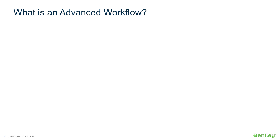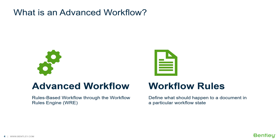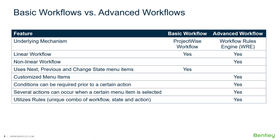So what is an advanced workflow in ProjectWise and how is it different from a regular workflow? An advanced workflow is also known as a rules-based workflow and operates using the workflow rules engine. Workflow rules are used to define what should happen to a document in a particular workflow state when a specific operation is selected on the document change state menu in ProjectWise Explorer or ProjectWise 365 projects. The main difference is that the advanced workflow uses the workflow rules engine and allows for non-linear workflows.